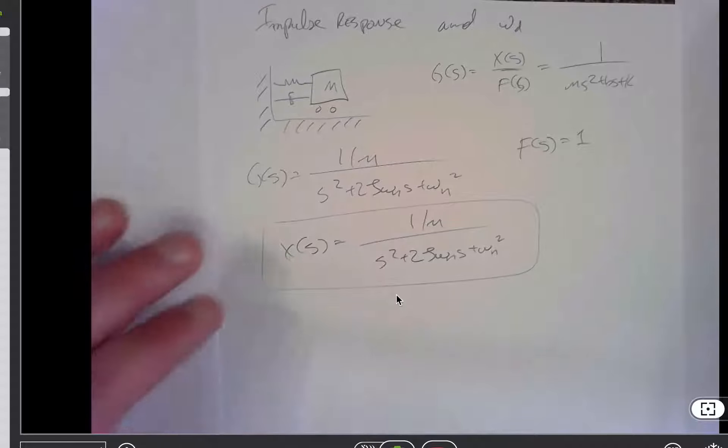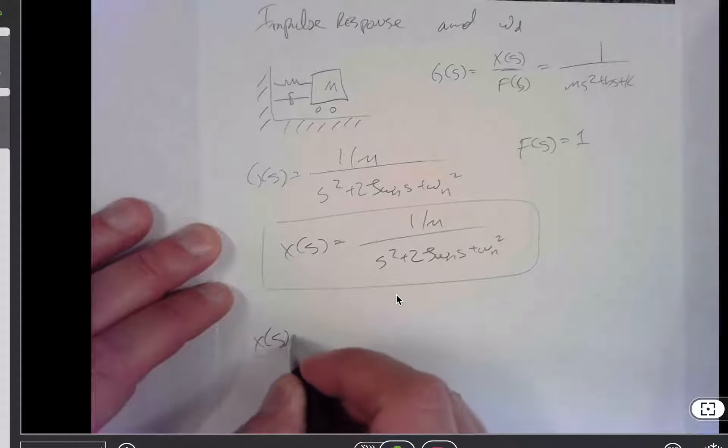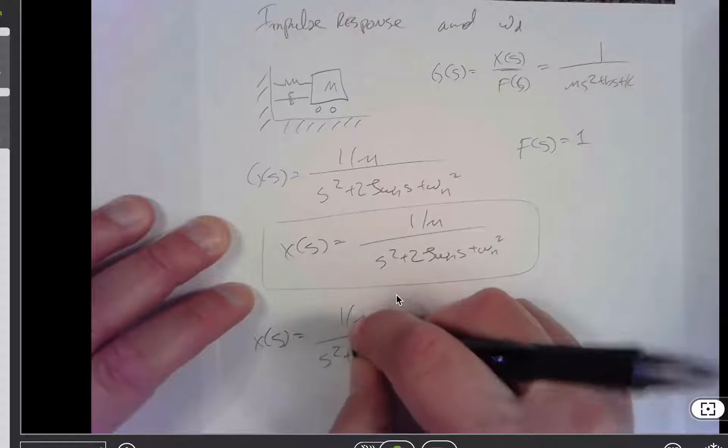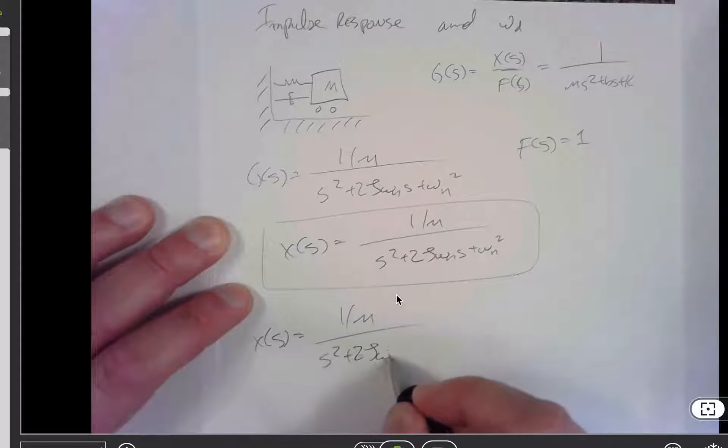So my suggestion is that if we have x of s is equal to 1 over ms squared plus 2 zeta omega ns plus omega n squared.